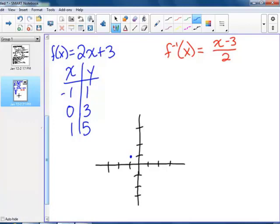So I'm going to plot that. Negative 1, 1. 0, 3. And, oh, looks like I need to go a little higher. And 1, 5. So there is my graph of my original function.